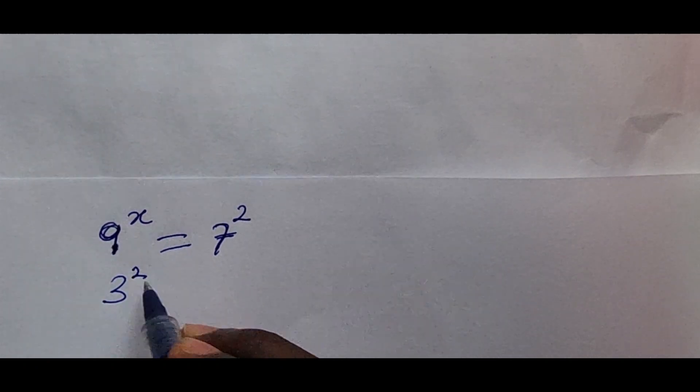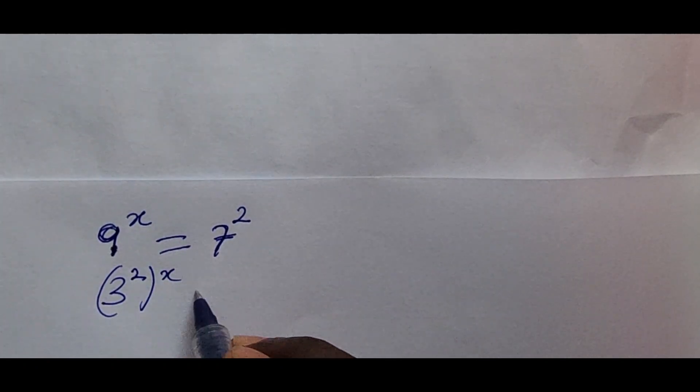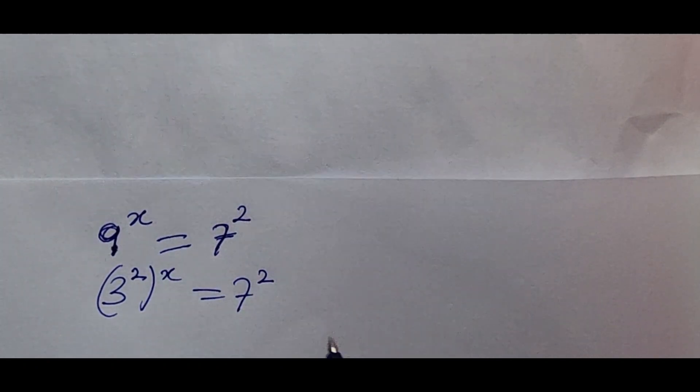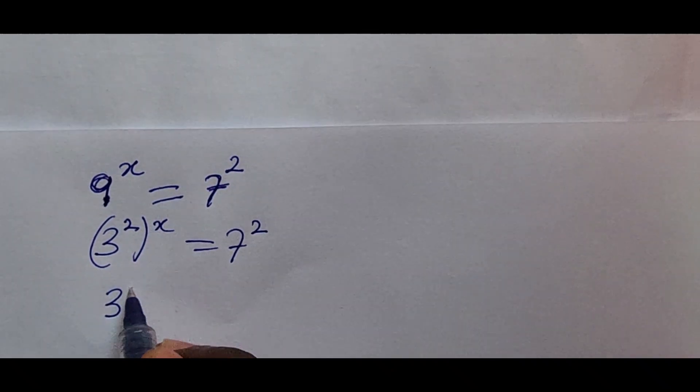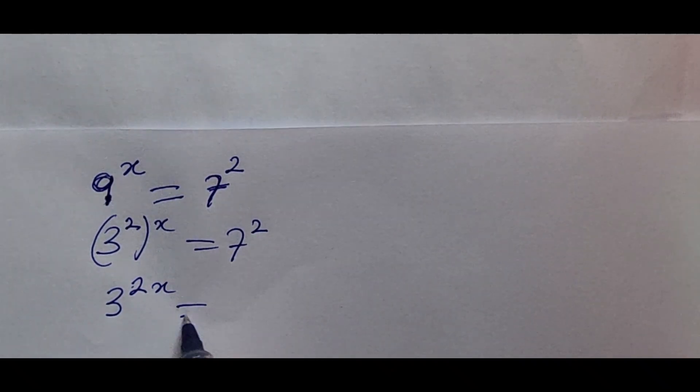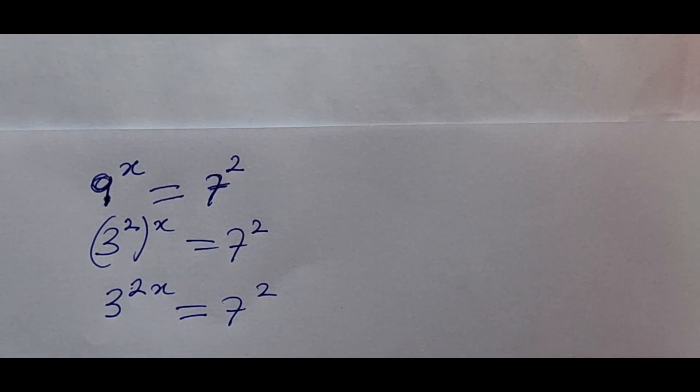So we have 3 to the power of 2 to the power of x is equal to 7 to the power of 2. And so we're going to have this to be 3 to the power of 2x is equal to 7 to the power of 2.